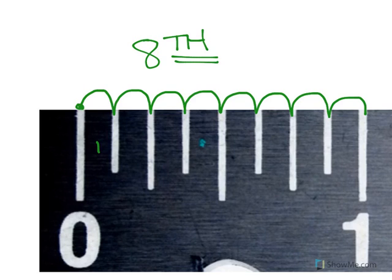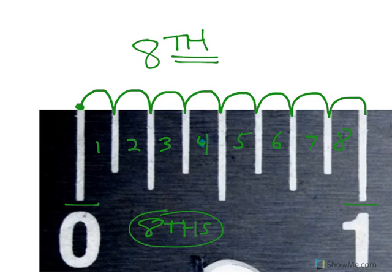Because there's eight spaces between zero and one. So this is a ruler that in some cases you'll actually see it. It says on the ruler eighths. If you don't see that all you need to do is count the spaces between zero and one and you'll know whether you're using an eighths inch ruler. Isn't that easy?